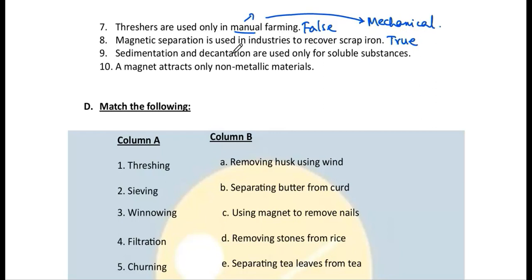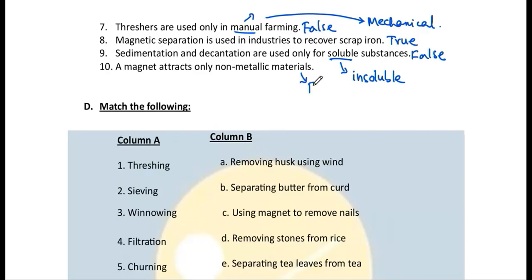Number 8: Magnetic separation is used in industries to remove scrap iron — true. Number 9: Sedimentation and decantation are used only for soluble substances — false. They are used for insoluble substances. Number 10: A magnet attracts only non-magnetic materials — false. A magnet attracts only magnetic materials.